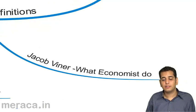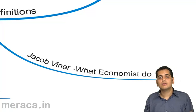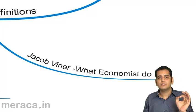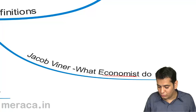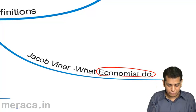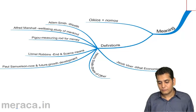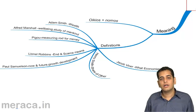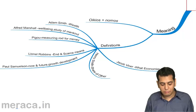Finally, Jacob Wiener defined economics as economics is what economists do. This is how he did our definitions part.